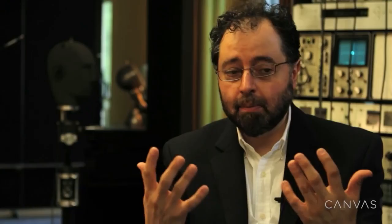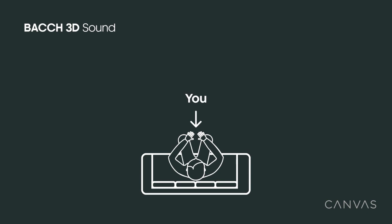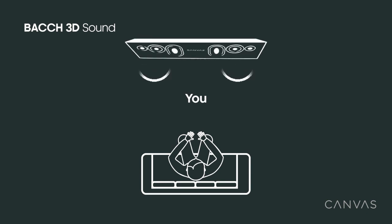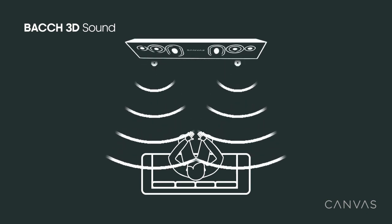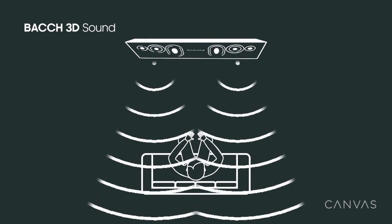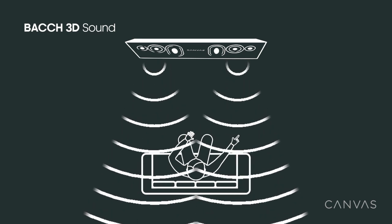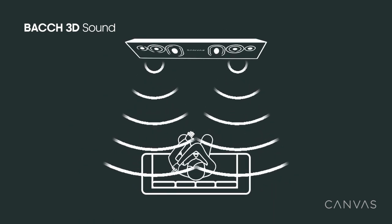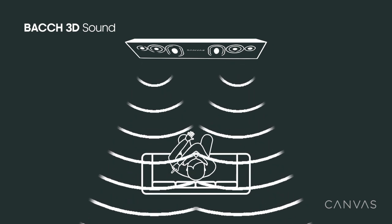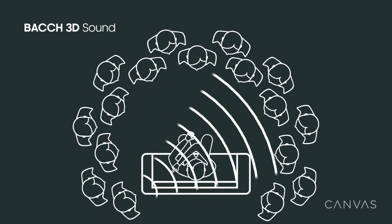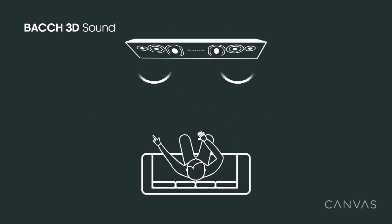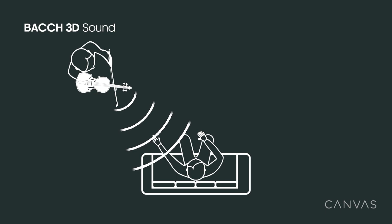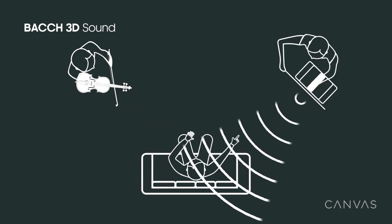3D sound is for you to sit in front of some speakers — ideally two loudspeakers only — and be able to play an orchestra or an ensemble or a band and be able to locate unambiguously the location of each sound source. If you have a choir, you can point to every person in the choir. If you have a symphony orchestra, you can see the viola coming from here, the bass coming all the way from the right. In other words, a 3D audio image of that event.